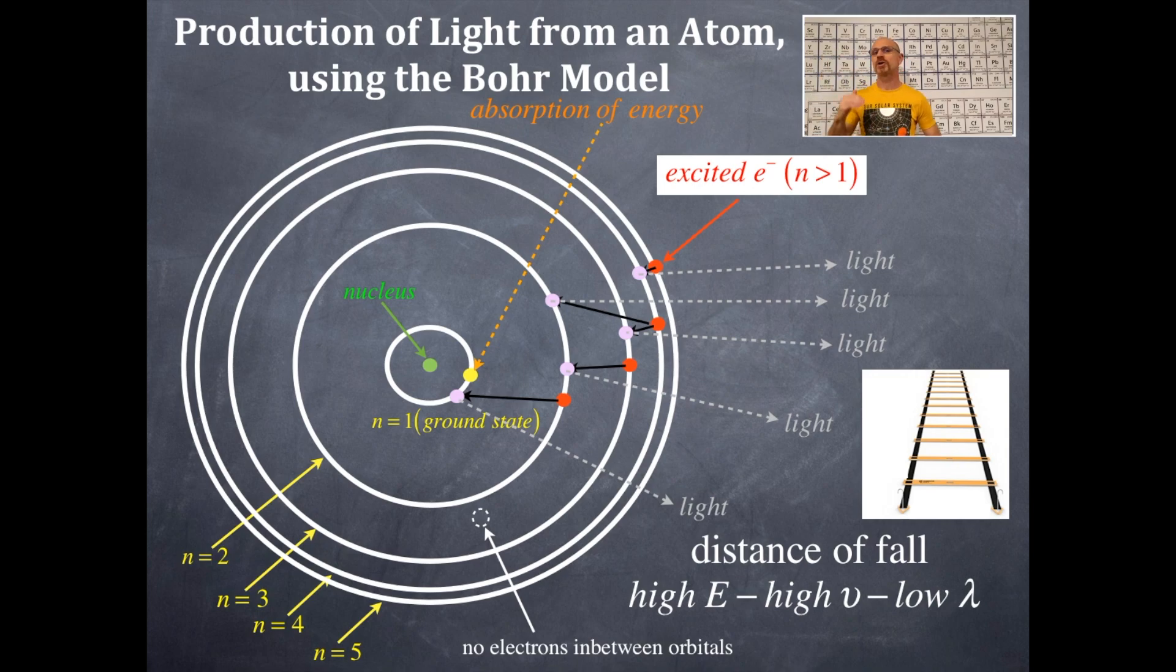The rungs to the ladder are not equal distant. So, this is a very special ladder. The ladder rungs are far apart initially, and as you get to the top, the rungs of the ladder are compressed, and the distance is very short. So, therefore, the rungs to the ladder in between n equals 1 and 2 is a great distance. And the rungs to the ladder between n equals, let's say, 6 and 7 is very short. Hopefully, that makes sense to you.